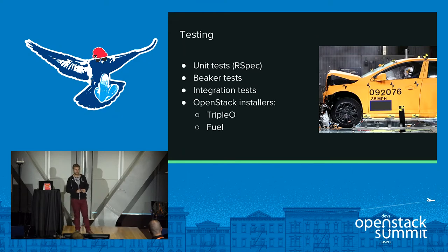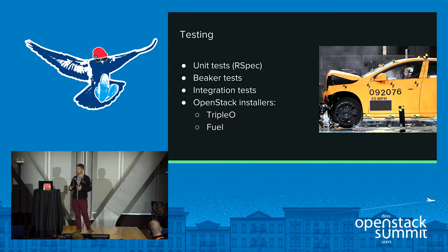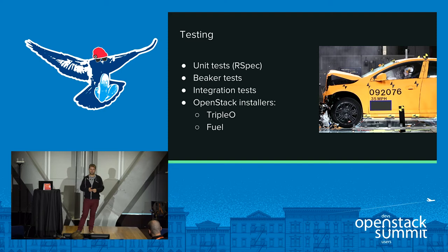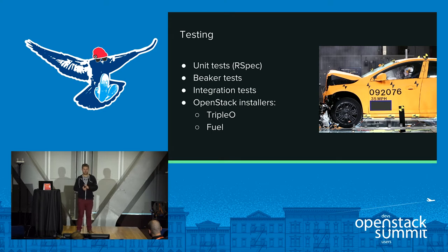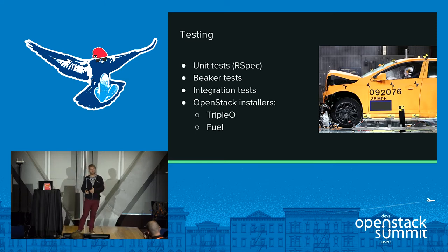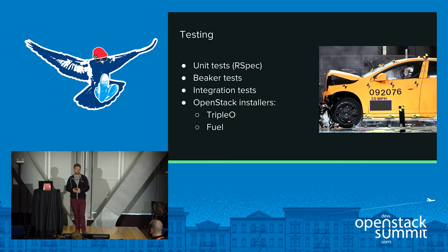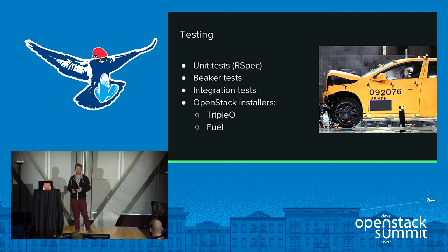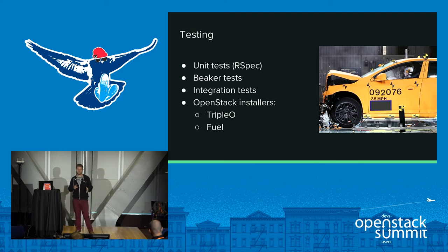So how do we test the modules? When you create a patch on your laptop and want to send it to the Puppet modules — whether it's a bug fix or a new feature — the patch goes through the gate. In OpenStack we have different kinds of tests. Some can be run on your machine; others are complicated to execute, so we have CI jobs in place. For the ones you can run locally, we have unit tests using rspec. If you need help writing tests, the team is always happy to help.